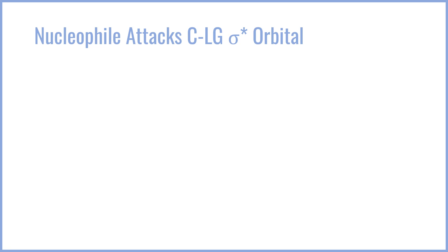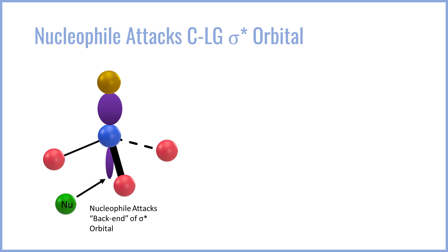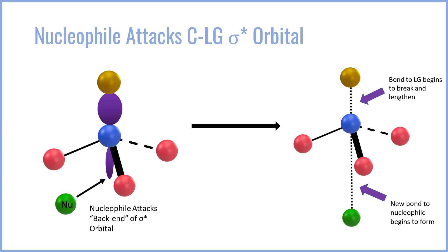I want to start off by summarizing the need for a nucleophile in the SN2 process and how that actually works to effect a substitution. In an SN2 reaction, the nucleophile must attack the backside of the antibonding orbital between the carbon and the leaving group bond. The carbon-leaving group bond — the blue and gold atoms — have this purple orbital, the antibonding orbital between them, and the nucleophile can attack the back end of that orbital from the opposite side. When this happens, the nucleophile proceeds to break the carbon-leaving group bond while forming a new bond to the carbon.